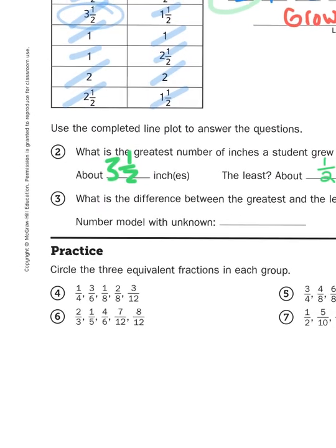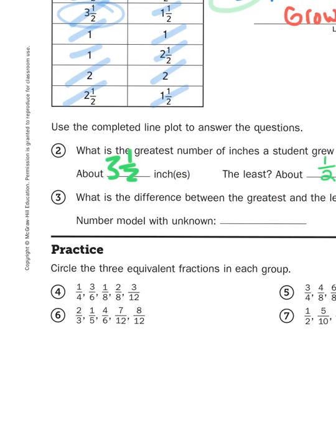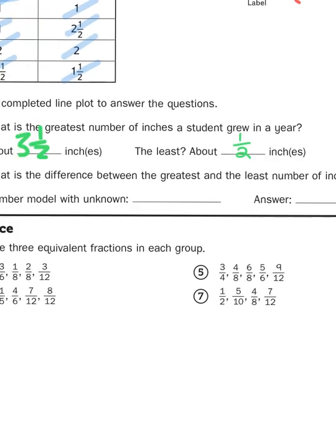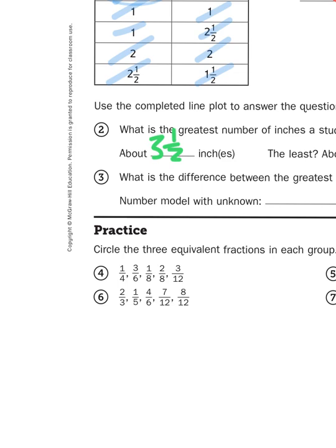So circle the three equivalent fractions in each group. So you have, looks like, five fractions in each group. You got to figure out which are equivalent, or what are the same amounts. Let's just start with number four, shall we? So we have one fourth, three sixths, one eighth, two eighths, and three twelfths.